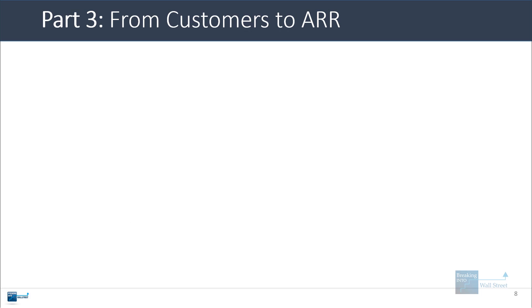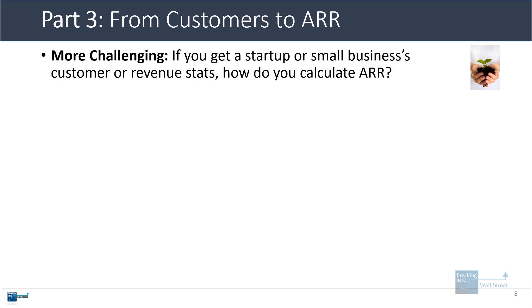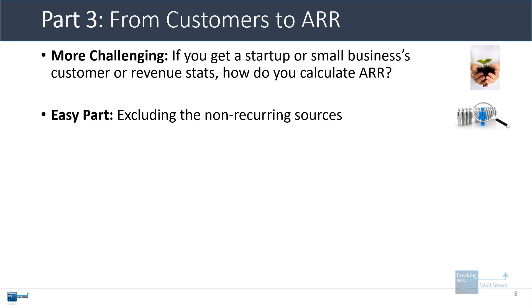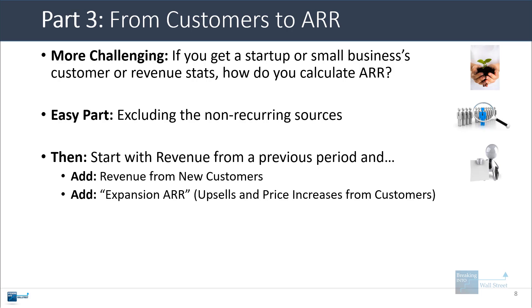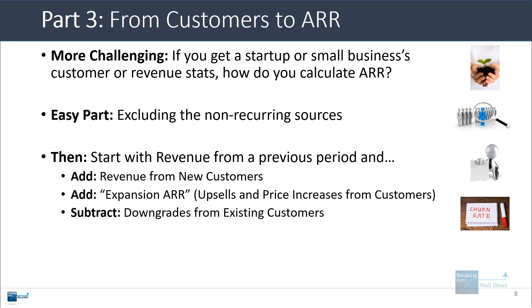Let's now go into the customer level analysis. One thing that often comes up with ARR is that you're not really working with large public companies, but rather with startups or small businesses. The easy part here is to exclude the non-recurring sources. Typically, what you do is start with the recurring revenue from a previous period, then add revenue from new customers, add expansion ARR in the form of upsells and price increases from existing customers, then subtract downgrades from existing customers, and then subtract cancellations or churn.